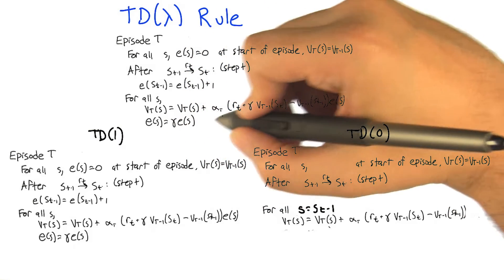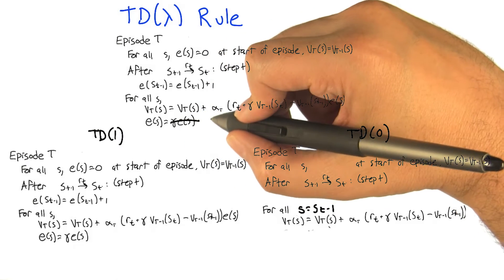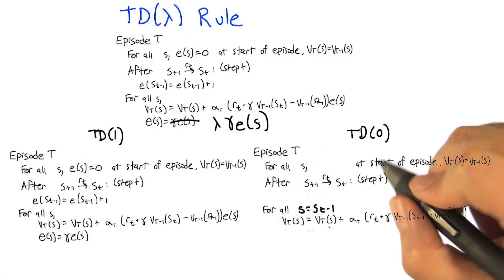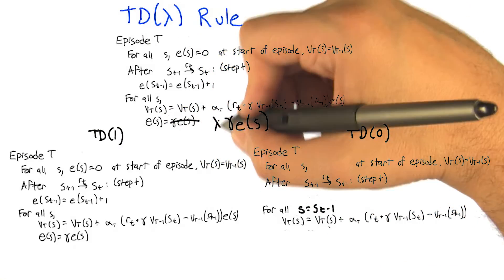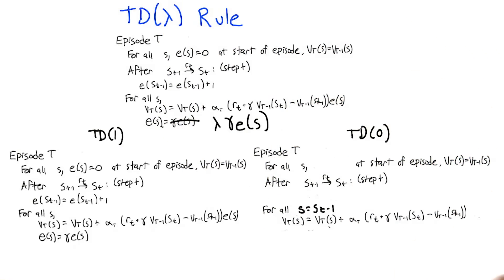I'm going to take this gamma decay of the eligibility, and I'm going to change it to a lambda gamma decay of the eligibility trace. All right. So all I've done here is, it's exactly TD(λ), except I just threw in an extra lambda here as a multiplier in the update of the eligibility rule. And boom, we're done.